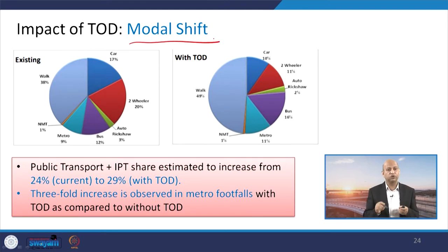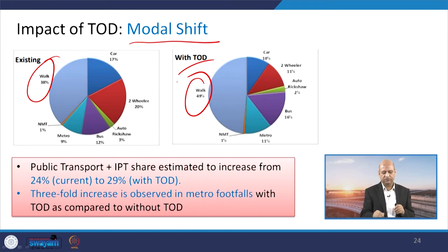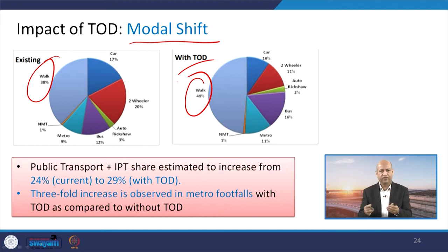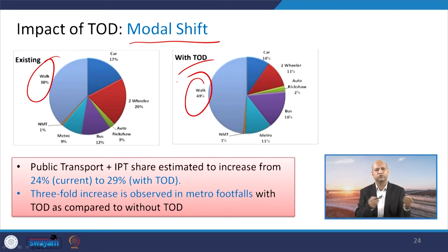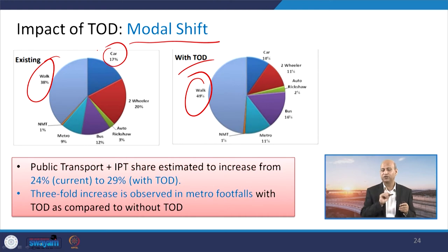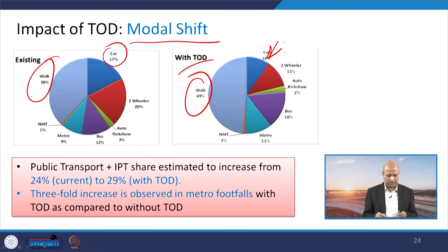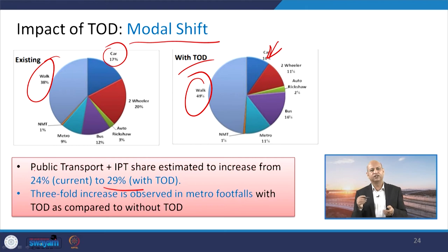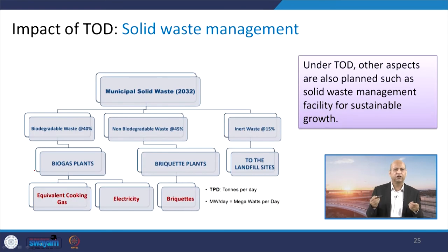In terms of modal shift, existing walkability is only 38%, but with TOD it is estimated at around 49%. When facilities are available within walking distance, people are incentivized to walk. Car use is 17% without TOD and reduces to 10% with TOD — car dependency is reduced. The share of public transport and pedestrian-friendly mobility grows from 24% to 29%. That is a win-win situation and a greatly beneficial impact.